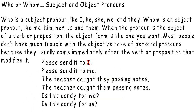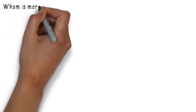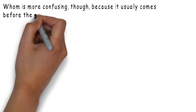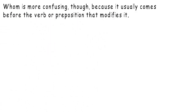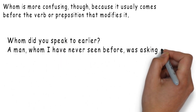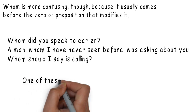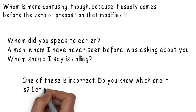For example: 'Please send to I' — that's weird. 'Please send to me.' 'The teacher caught they passing notes' — no. 'The teacher caught them passing notes.' 'Is this candy for we?' — no. 'Is this candy for us?' Whom is more confusing though, because it usually comes before the verb or preposition it modifies. Examples: 'Whom did you speak to earlier?' 'A man whom I have never seen before was asking about you.' 'Whom should I say is calling?' One of these is incorrect — do you know which one it is?